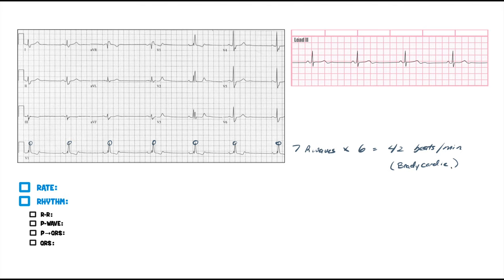So let's write that down: 42. And again, if you want to, you can use the other method — the 300, 150, 100. If you wanted to, you can count all the boxes. I think this way that we just did is pretty quick. But if you want to go ahead and calculate that out, that's good practice.